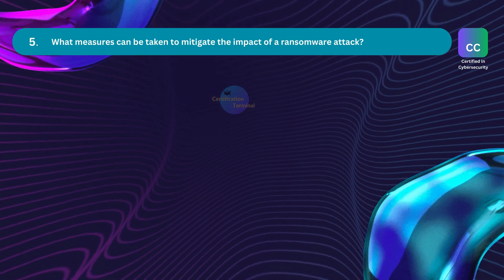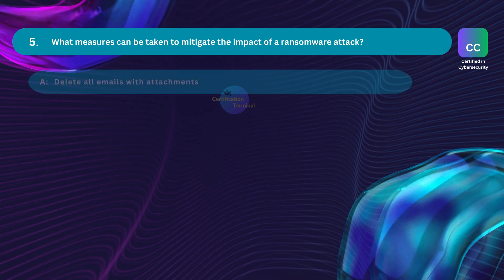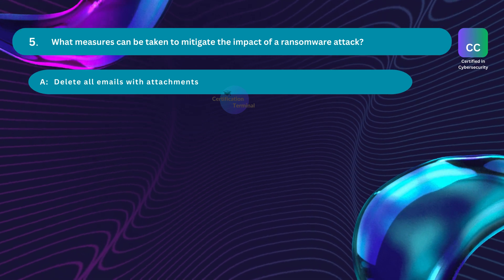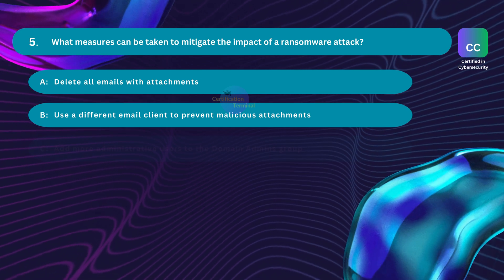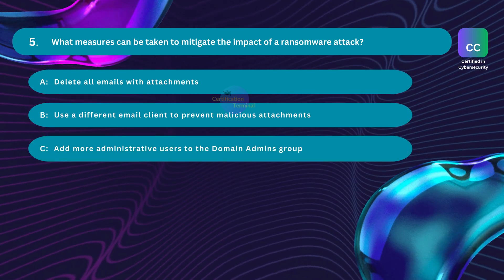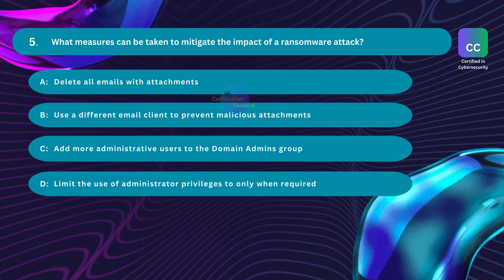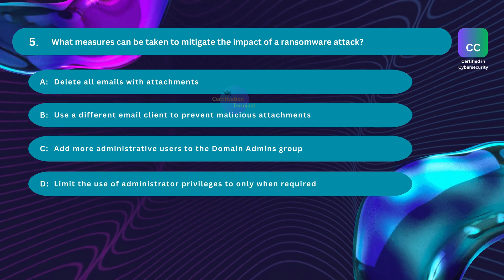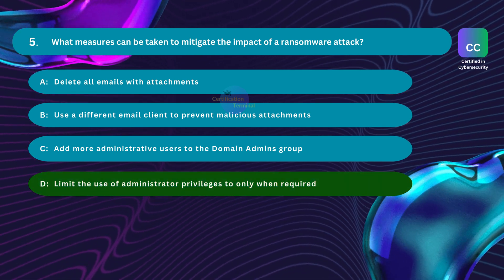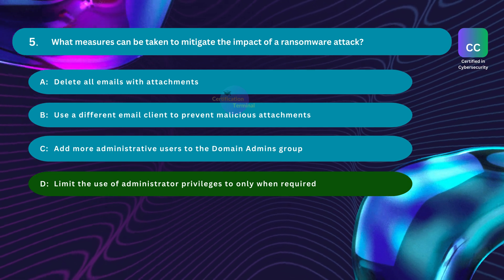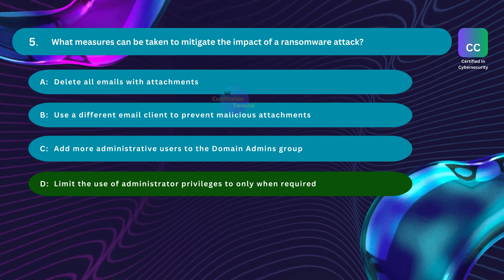Question number five: What measures can be taken to mitigate the impact of a ransomware attack? Option A: delete all emails with attachments. Option B: use a different email client to prevent malicious attachments. Option C: add more administrative users to the domain admins group. Option D: limit the use of administrator privileges to only when required.